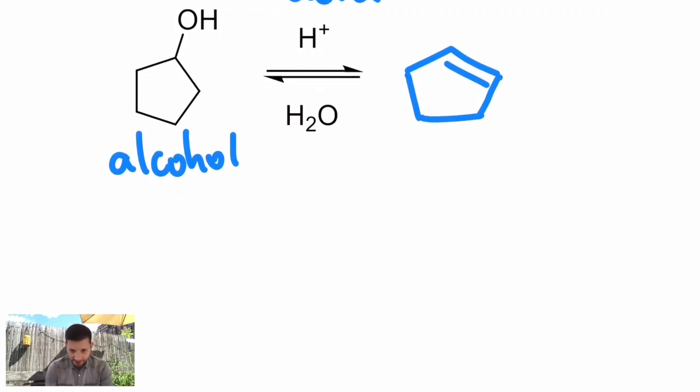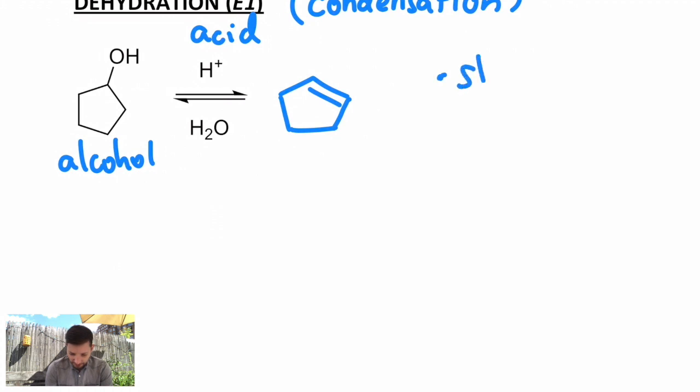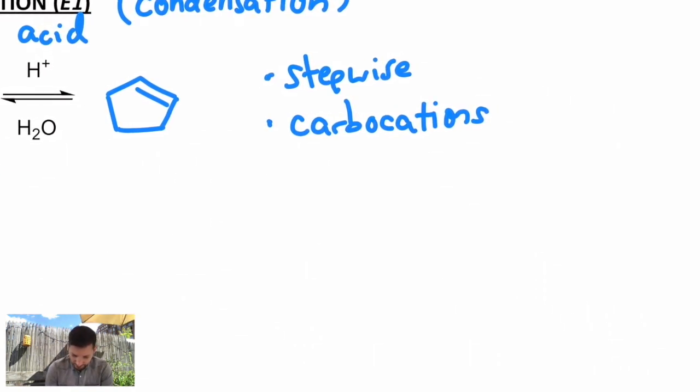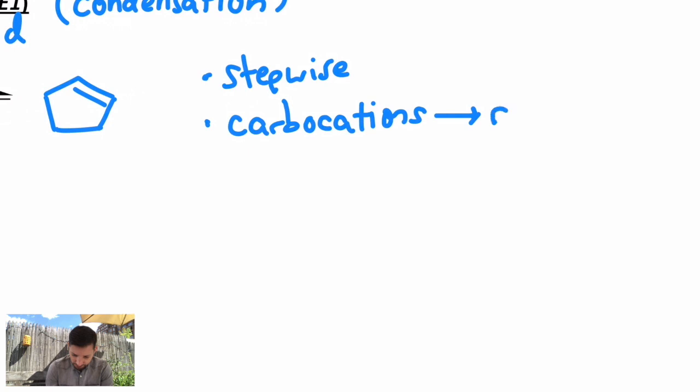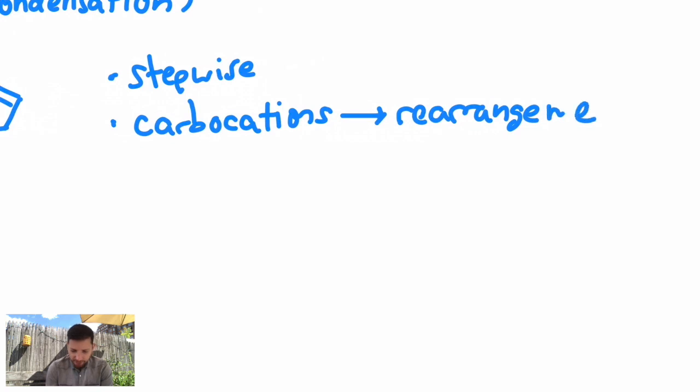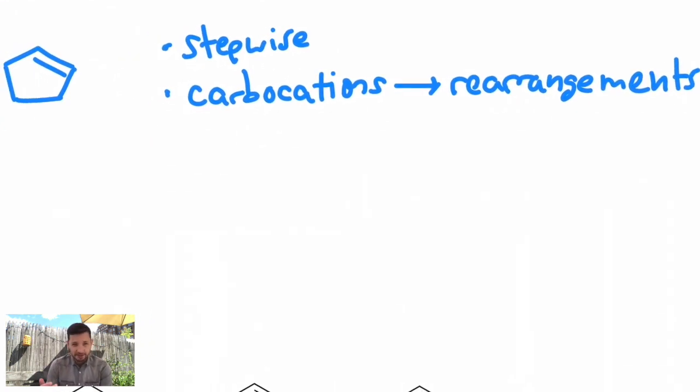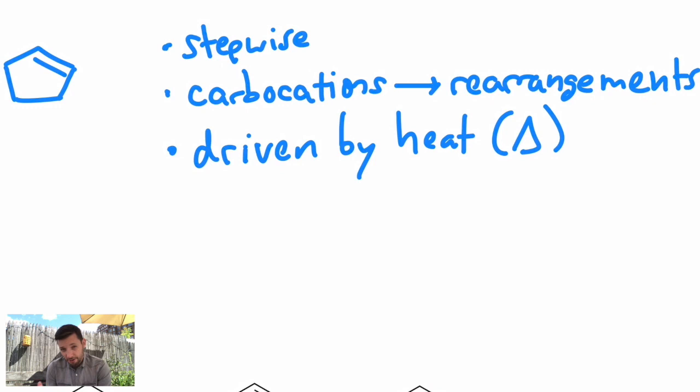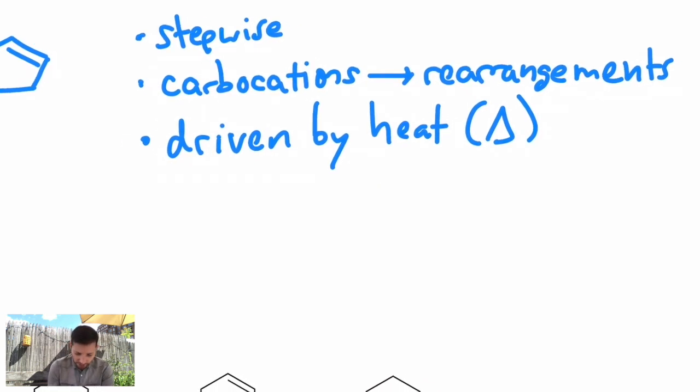This is not concerted. This is a stepwise reaction. It involves carbocation, as we're about to see, we'll do the mechanism. That means rearrangements can occur. So I'm just going to write the word rearrangements so we can watch out for those. The same kind of rearrangements we saw in all examples of SN1 and E1 mechanisms. This is an E1 mechanism. It's usually driven by heat. So you might just see the symbol that's a triangle, meaning the Greek letter delta, meaning thermal. And you usually do get the Zaitsev product.